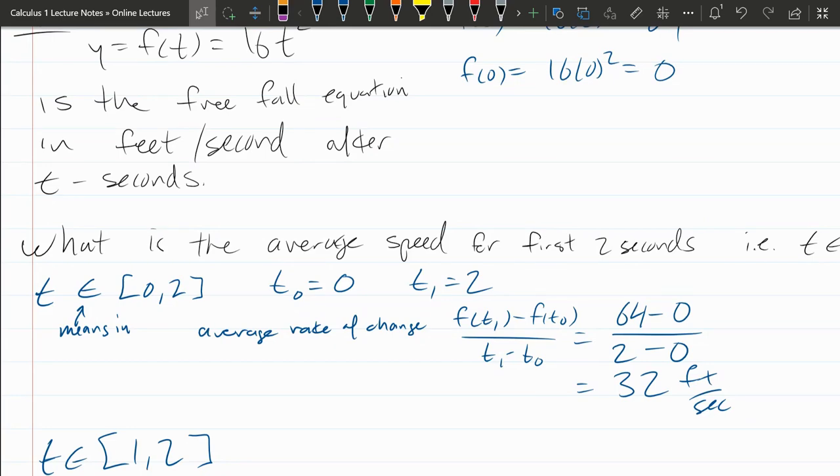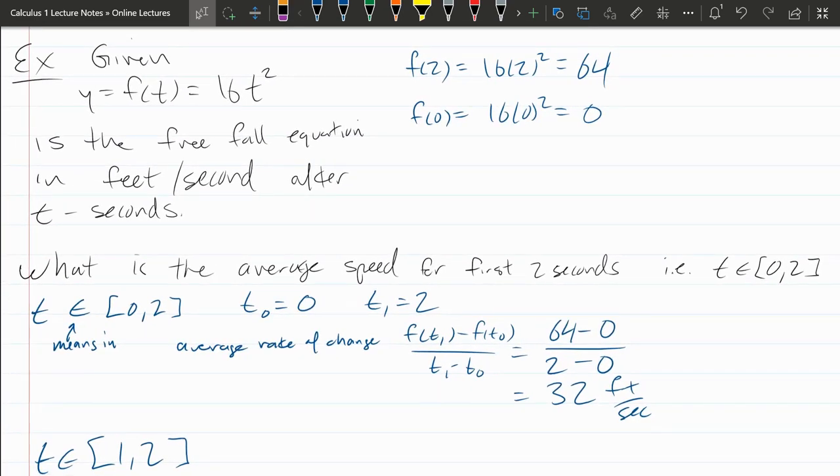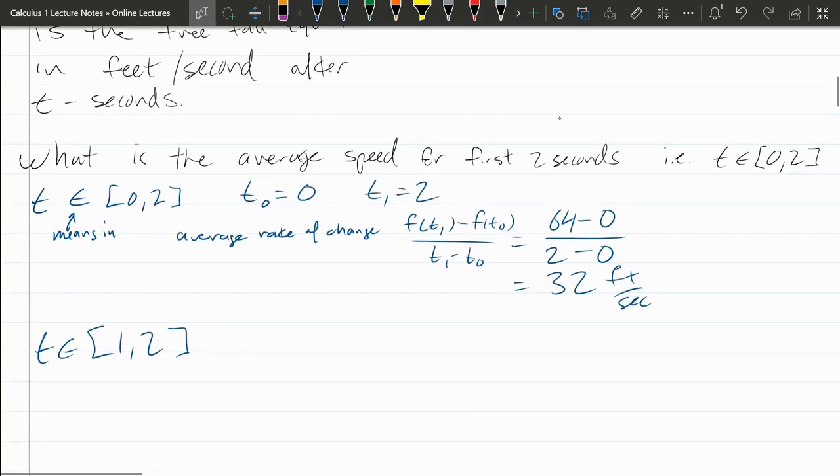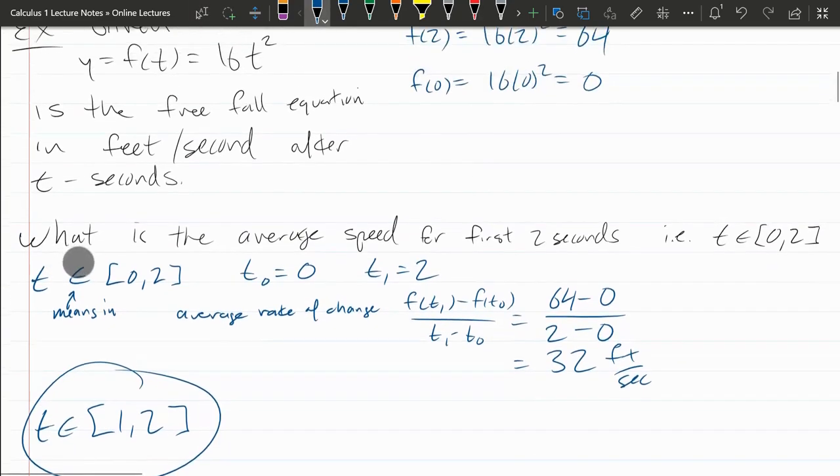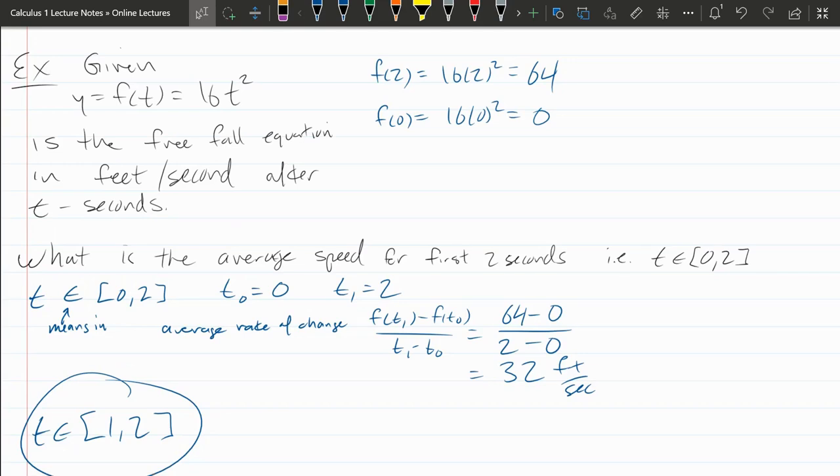So that was the average rate of speed. It's also known as the average rate of change. In this case, the rate of change of position. And that was between 0 and 2. We're going to now do the same problem between 1 and 2. So if you followed along pretty well, I encourage you to pause the video here and try to compute the average rate of change between 1 and 2 right now. It's almost identical, slightly different values.